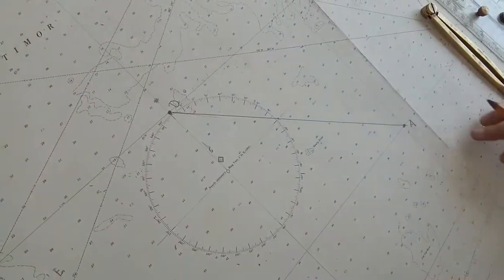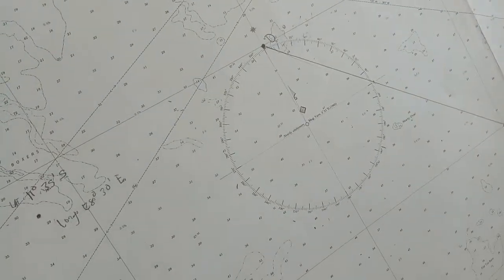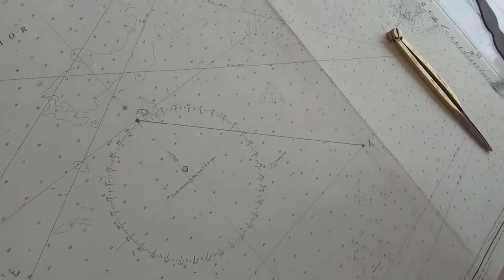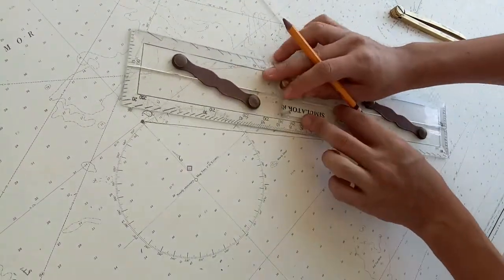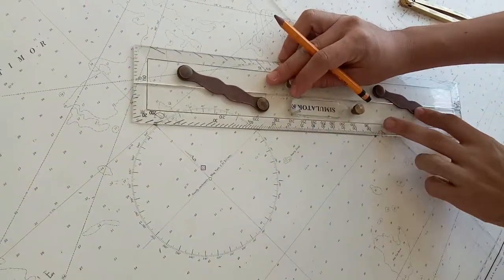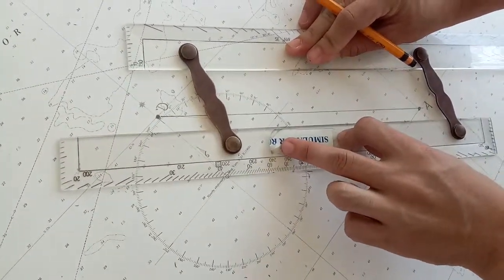So it can be used to get your course. So how to get your course? You need only triangle roller or parallel roller. For example, you just put this parallel roller to your RAM line and put it in.